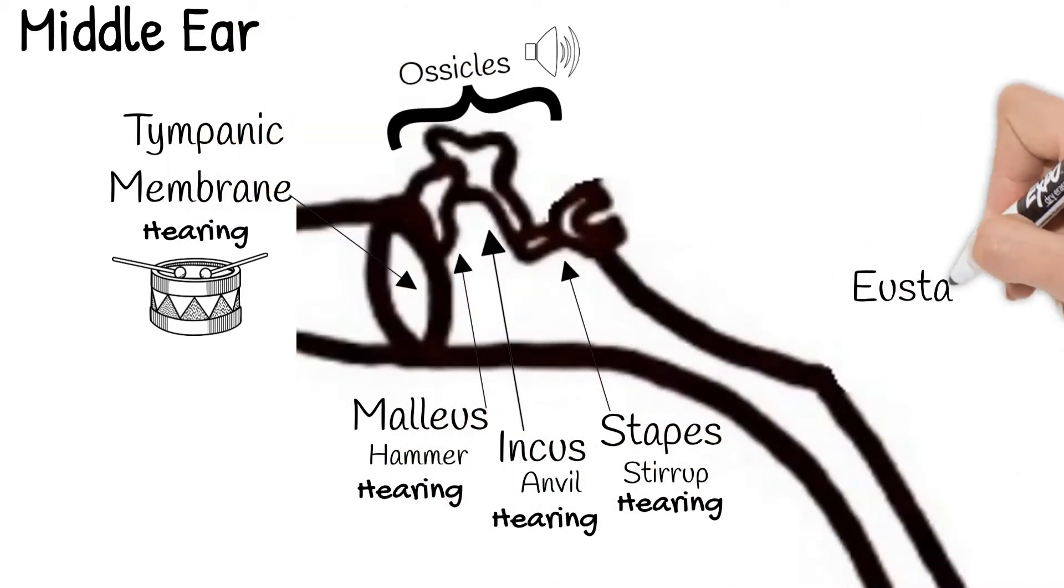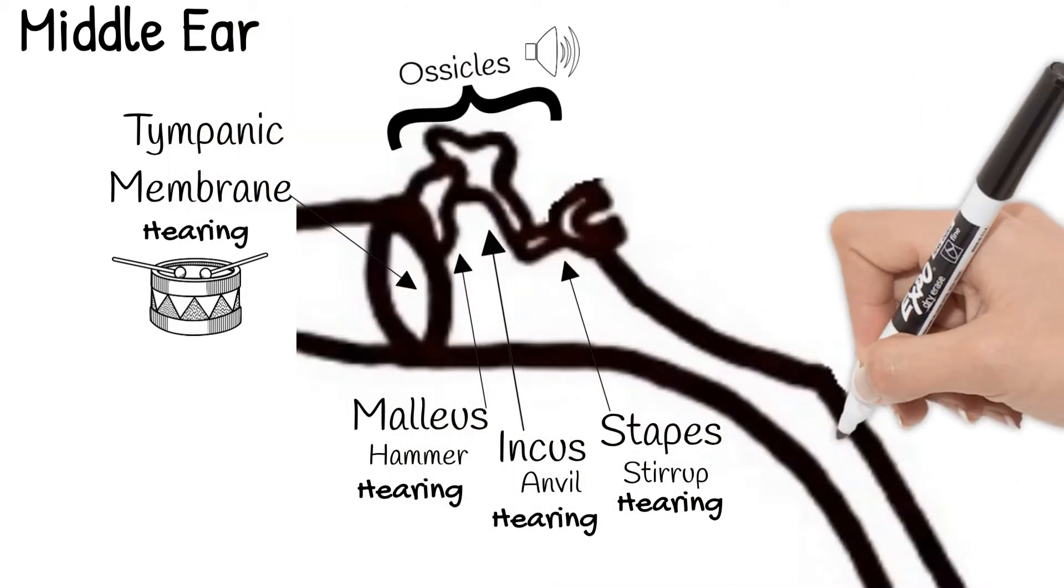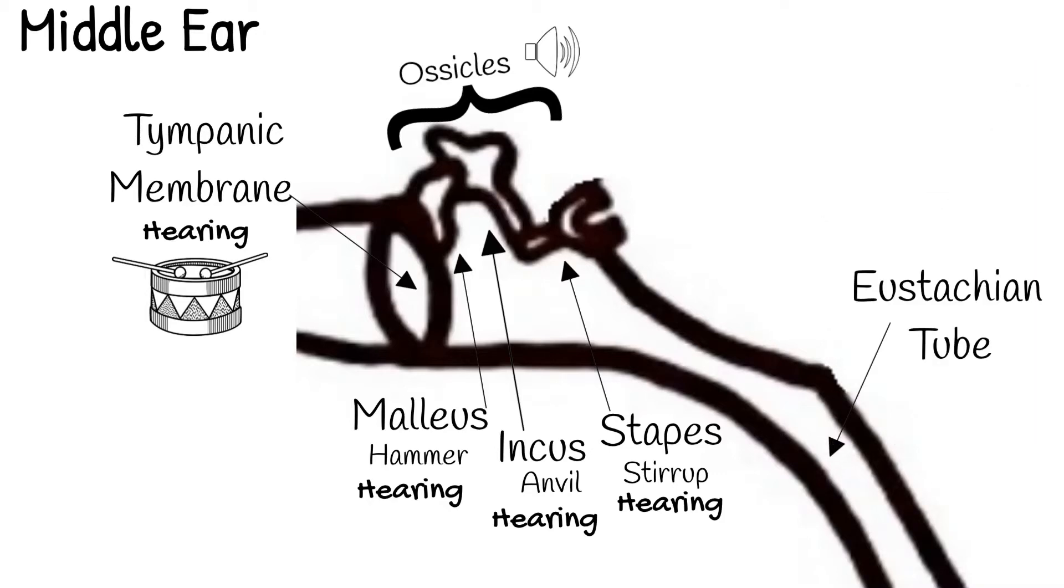The eustachian tube connects your middle ear to your mouth and nose. This is where pressure regulation comes in. This tube helps regulate the air pressure in your middle ear since the tympanic membrane blocks access to the auditory canal. When you pop your ears you change the air pressure in your middle ear to better match the air pressure in your auditory canal. You've probably noticed this is useful when you're riding on an airplane.